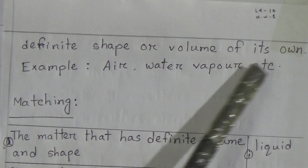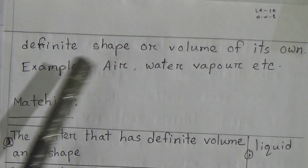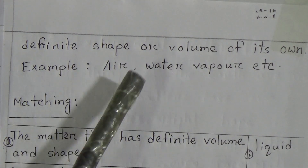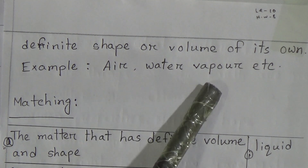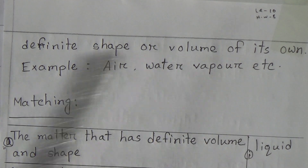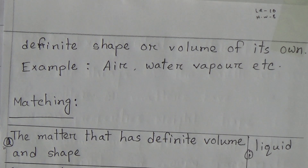And gas — gaseous matter flows and has no definite shape or volume of its own. Example: air, water vapor, etc.